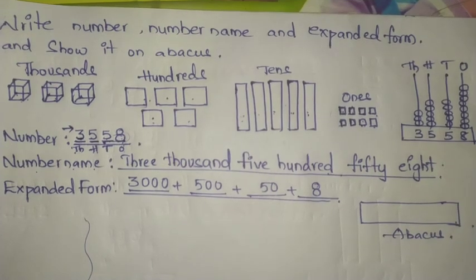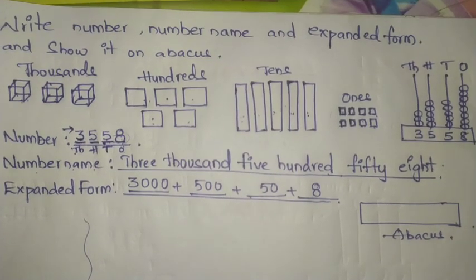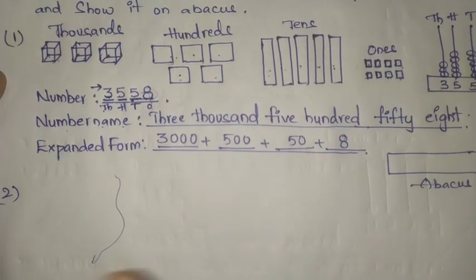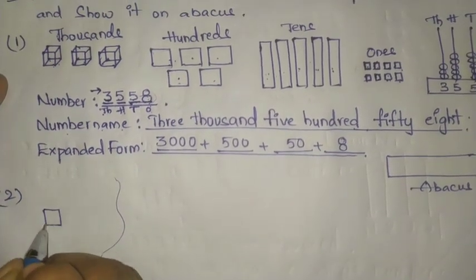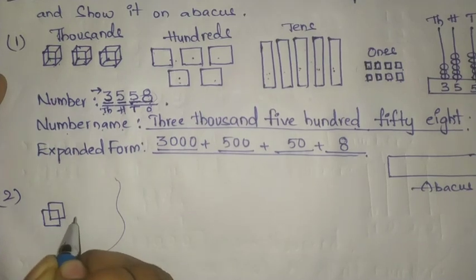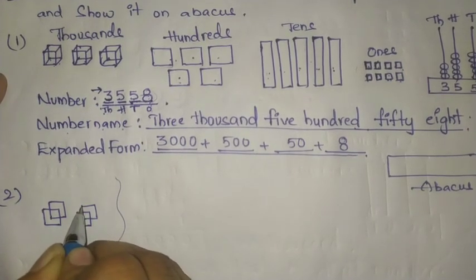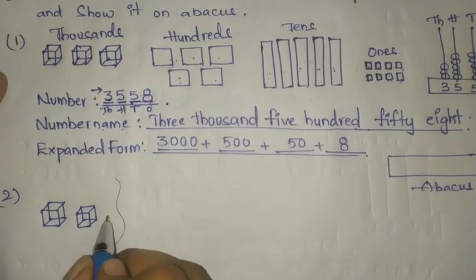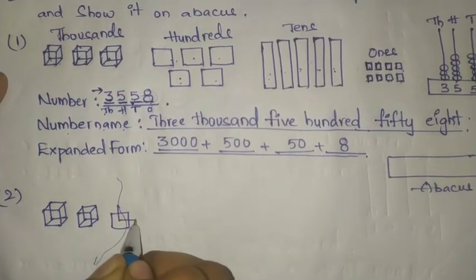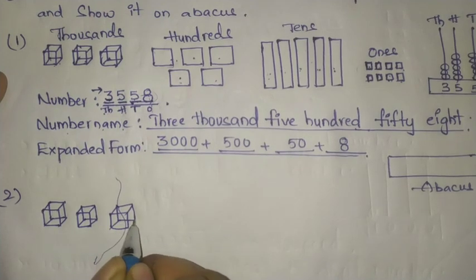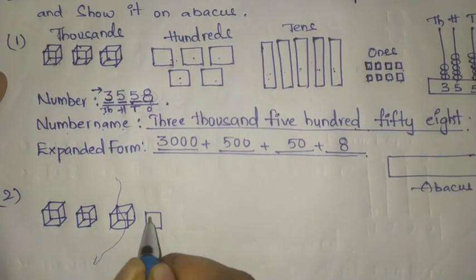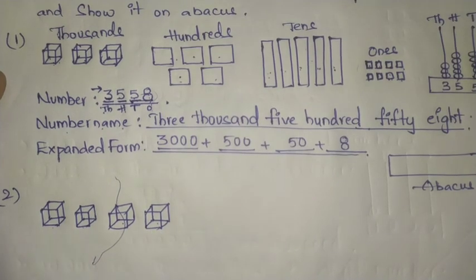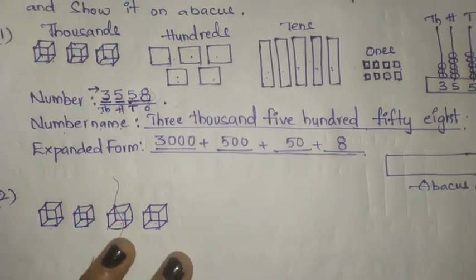Now I will explain one more problem. This represents thousands — how many thousands are here? Four thousands.